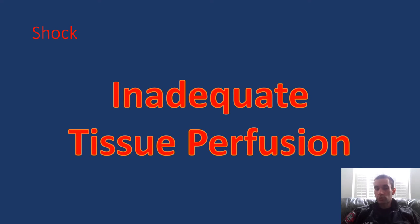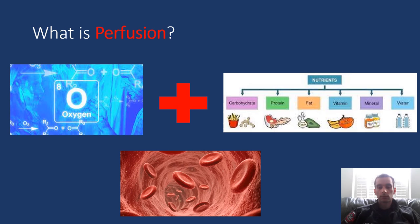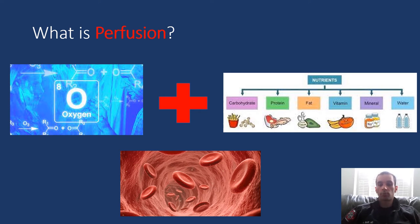Shock — specifically physiologic shock — is inadequate tissue perfusion. Perfusion is getting oxygen and nutrients via the blood to the organs that need it. A lot of times people think of shock as just blood flow, but you also need the blood to carry adequate oxygen and nutrients to the tissues and organs throughout your body.